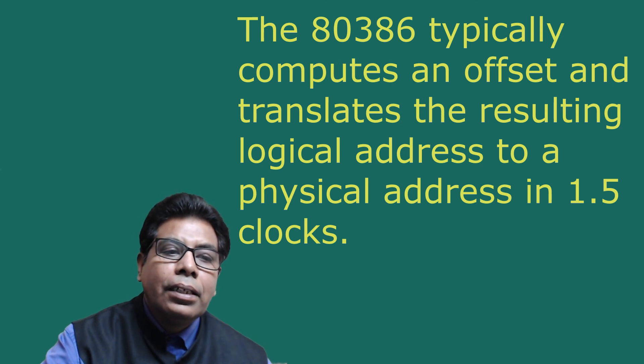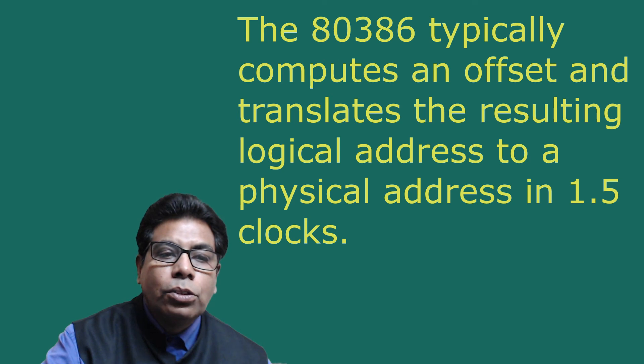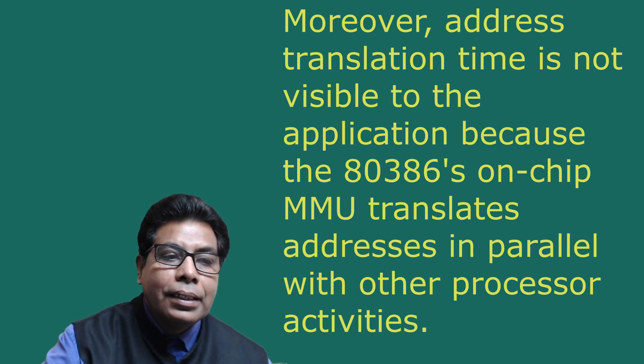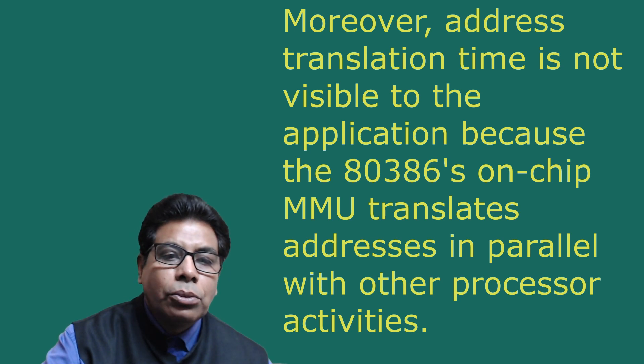With all its flexibility, the 80386 multi-stage address translation facility is nevertheless quite fast. The 80386 typically computes an offset and translates the resulting logical address to a physical address in 1.5 clocks. Moreover, address translation time is not visible to the application because the 80386 on-chip memory management unit translates the address in parallel with other processor activity.